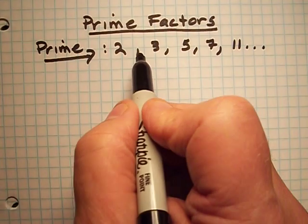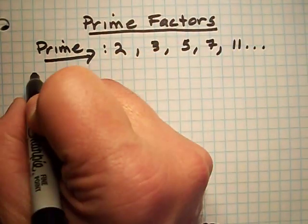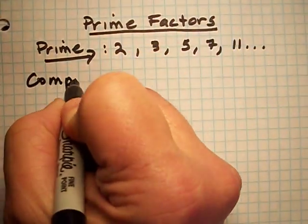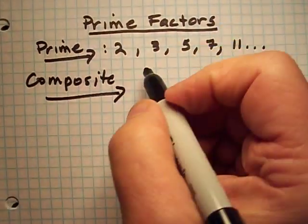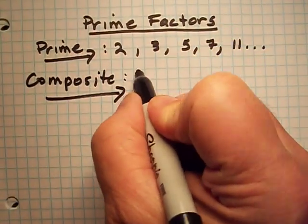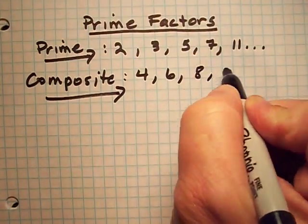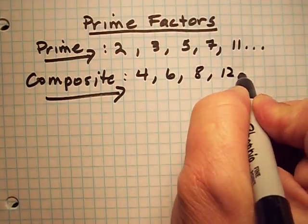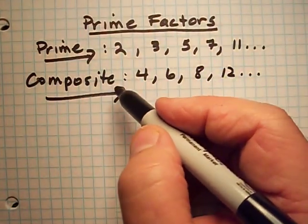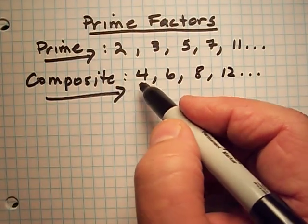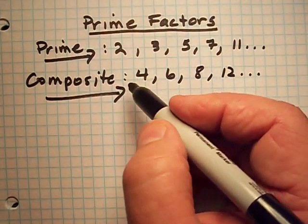These are all prime. If they're not prime, they're composite. Let me show you composite numbers. Composite would be 4, 6, 8, 12, and so on. Composite numbers can be divided by other numbers other than itself and 1.